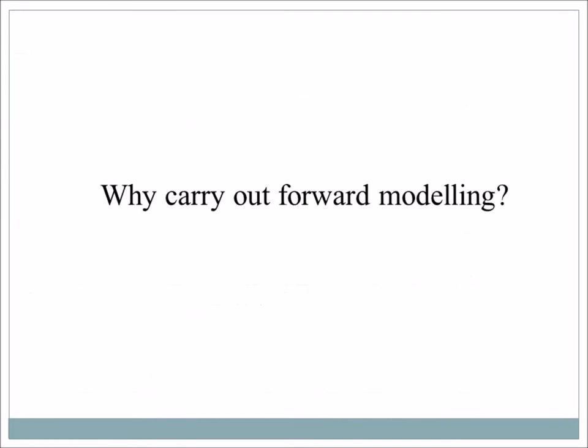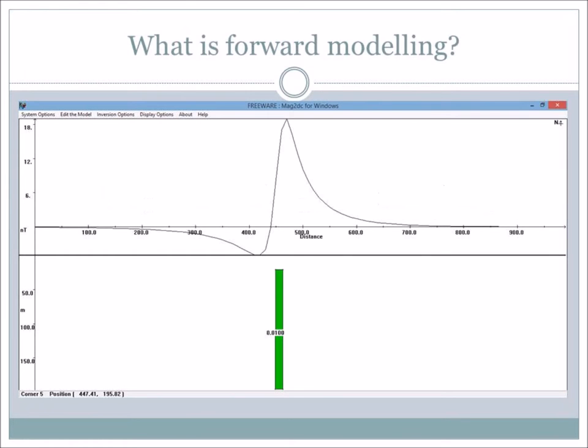Forward modeling is what we're going to be doing today. You don't just go to the field and guess what your data is going to look like — you put things into modeling software and work with it. In forward modeling, you put in a body and the software calculates what the magnetic signal would look like. So you can say: okay, that's what I'm going to expect in the field if I know I have dikes in my area.